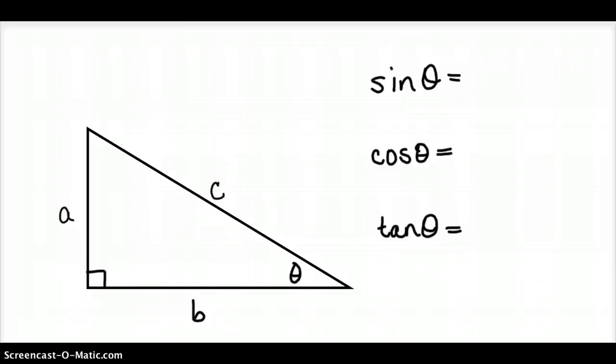So looking at this same problem, I could, if I wanted to, decide to move, and let's make this theta for this problem. Doesn't change anything except for my reference point. Now, instead of A being the opposite side, now A is the adjacent side. And B is my opposite side.